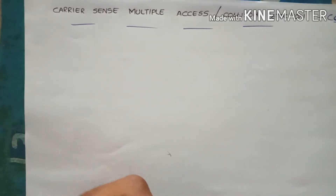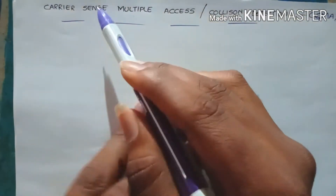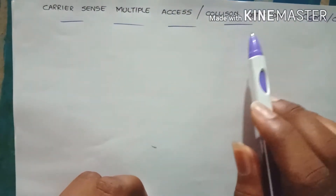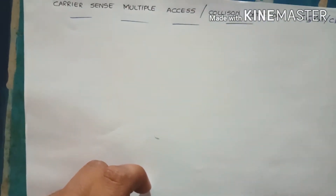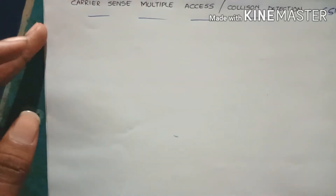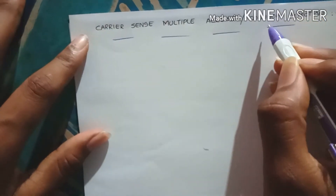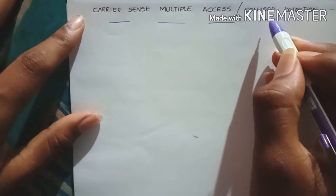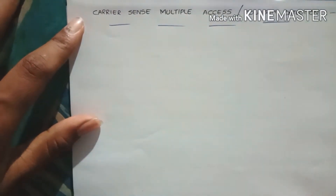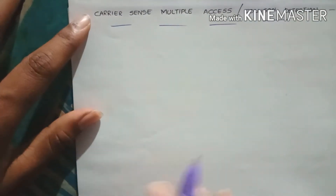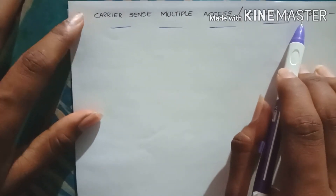Good morning everyone. We are going to discuss our next topic: Carrier Sense Multiple Access with Collision Detection — CSMA/CD. Collision detection means that while transferring data there will be a collision in data transmission. How does that collision happen, and how will it be detected? CSMA/CD is the detection technique we are going to use.